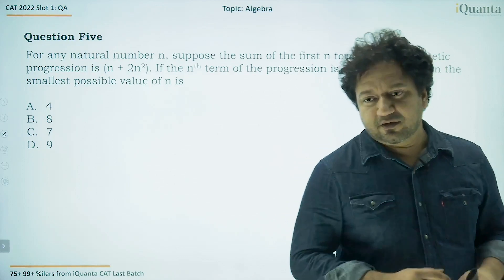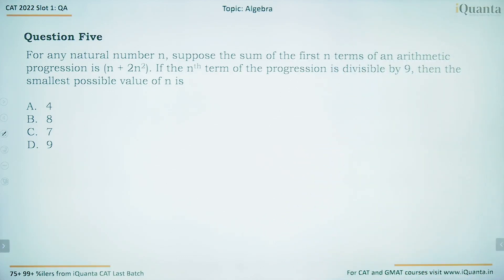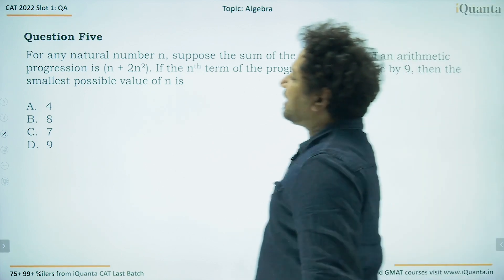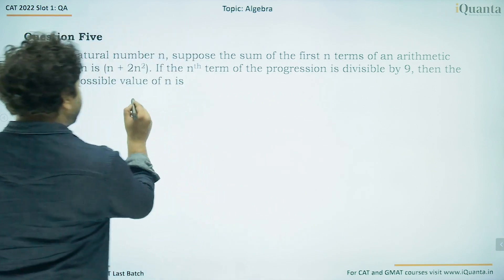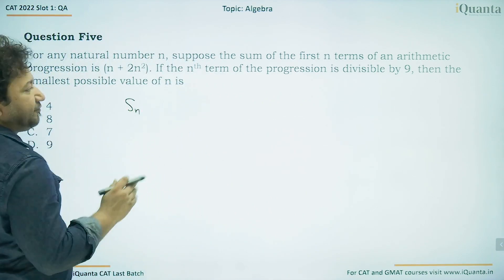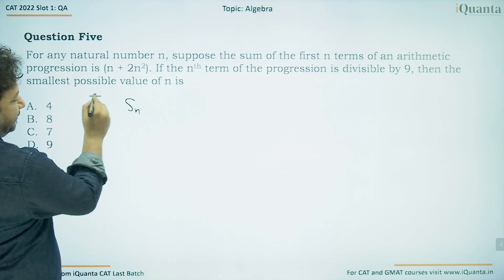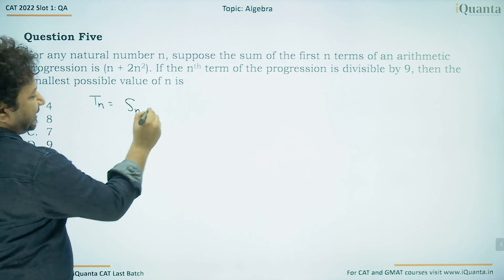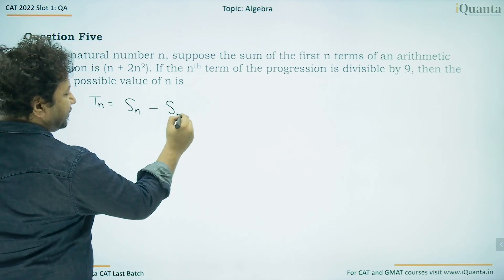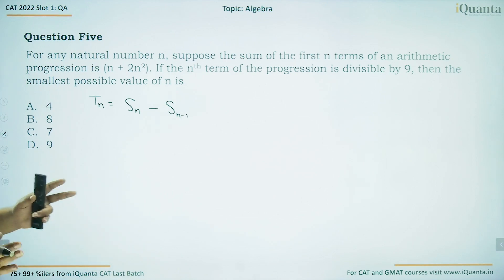Question number 5. For any natural number n, suppose the sum of the first n terms of an arithmetic progression is n + 2n². If the nth term of the progression is divisible by 9, then the smallest possible value of n is what? To find the nth term, we subtract the sum of (n−1) terms from the sum of n terms: tₙ = Sₙ − Sₙ₋₁.